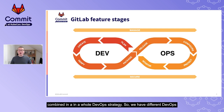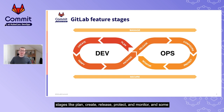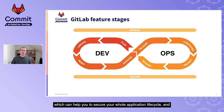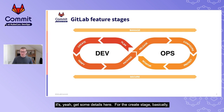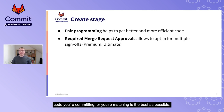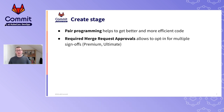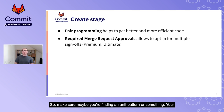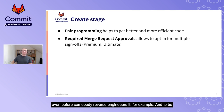GitLab's features are combined in a whole DevOps strategy across stages: plan, create, release, protect, and monitor. Each stage provides features to secure your application lifecycle, your application itself, and your Kubernetes cluster. For the create stage: use pair programming so that security issues like the one in our demo - which a senior developer would likely have caught - are found early.